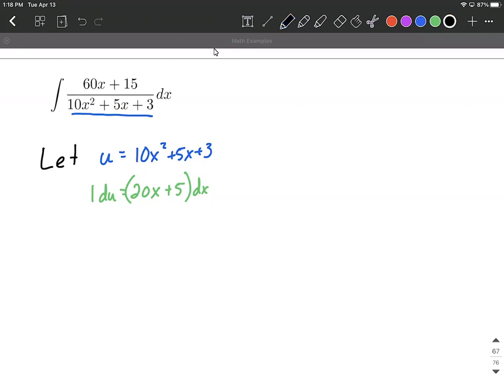So to get there, what we want to do is do a little bit of factoring in this situation where we can say the numerator, we can factor out a 3 from each of those terms, leaving us with 20x plus 5. dx is still off to the side, and at this point, we still have the same denominator. That hasn't changed yet.